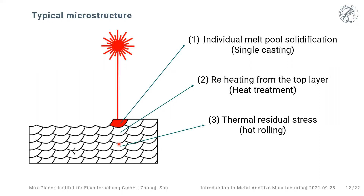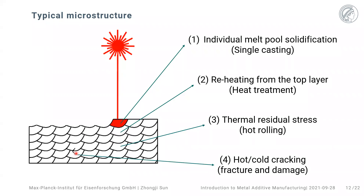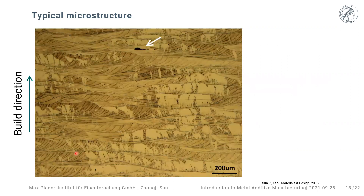Sometimes the residual stresses are so high that they introduce a ton of dislocations. In conventional metallurgical terms, this is very similar to a hot rolling process, and we often see different types of cracks — either hot cracking or cold cracking. This makes AM very interesting in that it involves many aspects of conventional metallurgy, which is also why many conventional metallurgists can move into AM so rapidly.